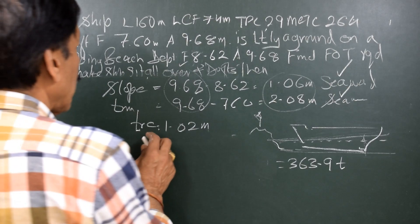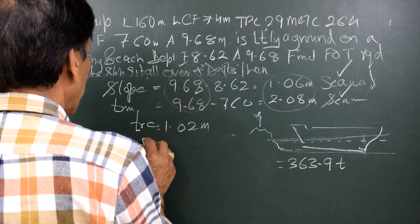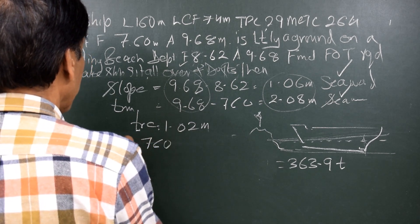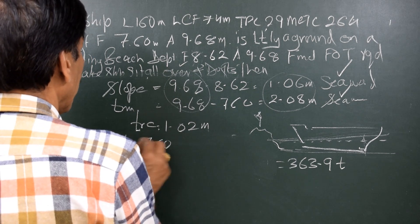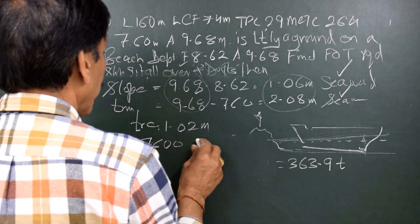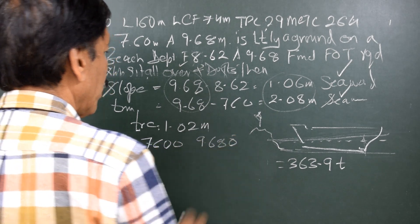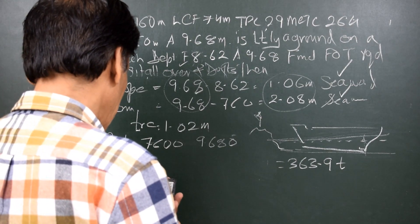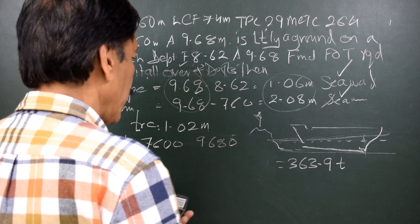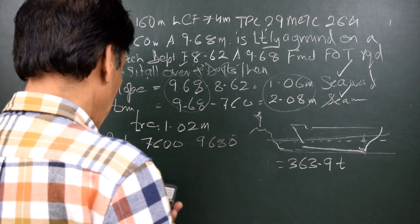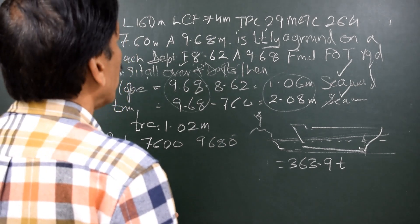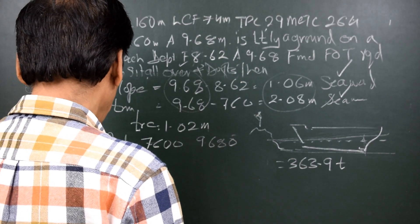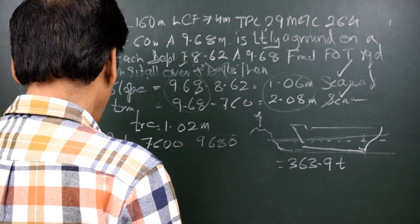So let us apply standard trim format in the question now. In two stages, we will find out what is the final draft. So we start with the initial draft: forward 7.60, that is the initial draft 7.600, aft 9.680. And in the first stage, there is this bodily rise, 363.9 divided by 100 TPC, that is 2900, gives me 0.125.